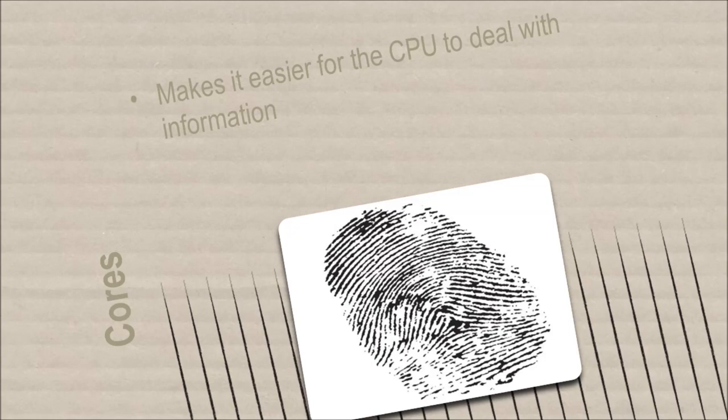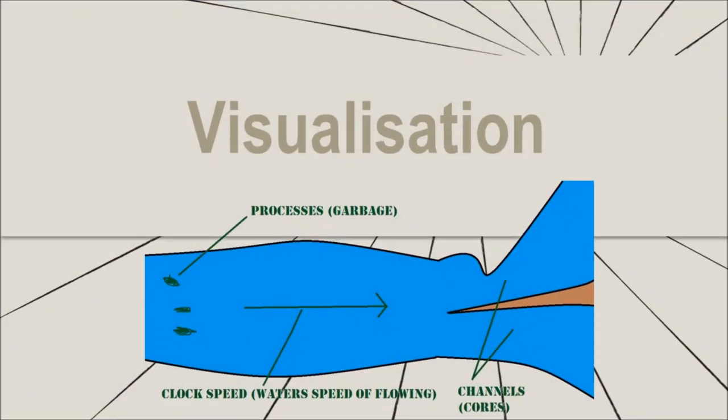Now, if you don't understand this, I don't blame you. I'll try and visualise it. Imagine a river. The river is your processor as a whole. Garbage is chucked at one end of the river. The cache ensures that the garbage is chucked in quickly. The garbage is data which needs to be processed. The river's primary objective is to get rid of the garbage or process the information.